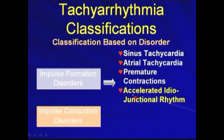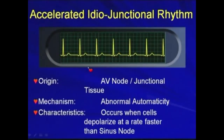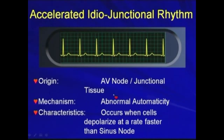After the premature contraction, let's look at the accelerated idiojunctional rhythm. This is an example of accelerated idiojunctional rhythm. The origin is from the AV node or junctional tissue. It's due to abnormal automaticity.